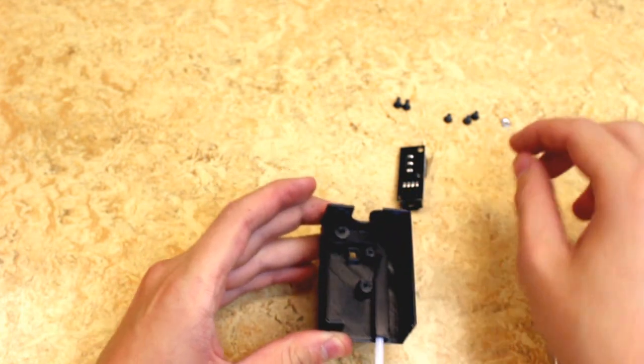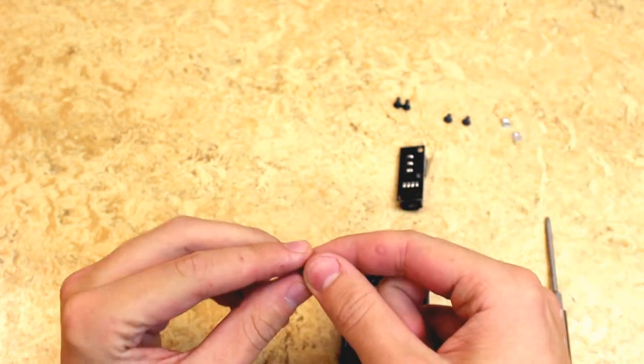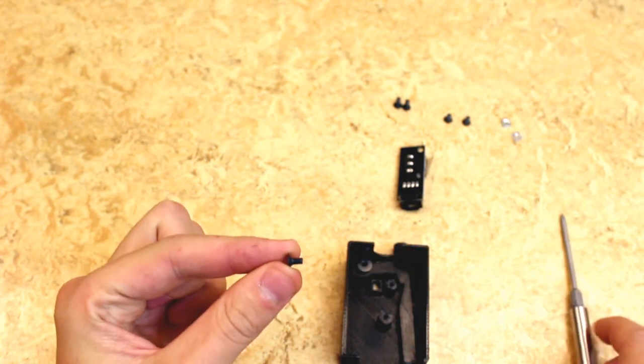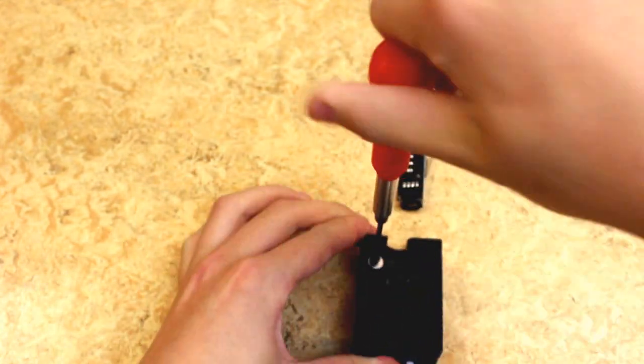Now take the spacer and one of the shorter screws and fasten the arm to the casing. Don't make it too tight as the arm needs to be able to move.